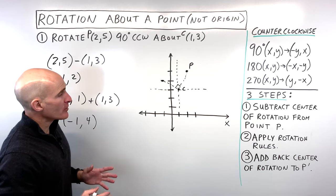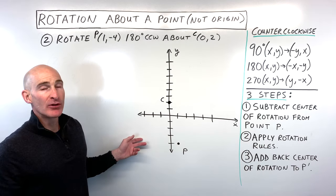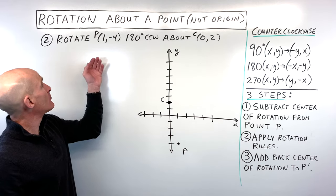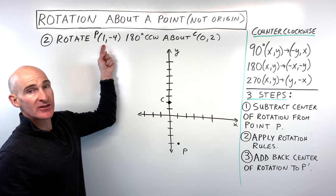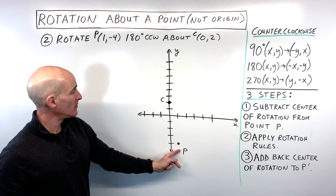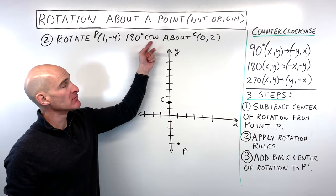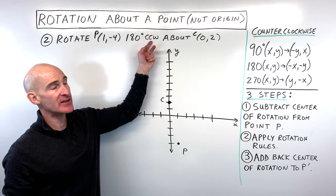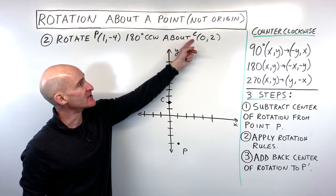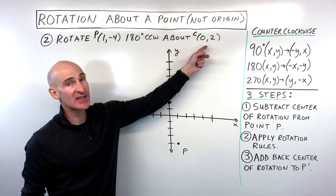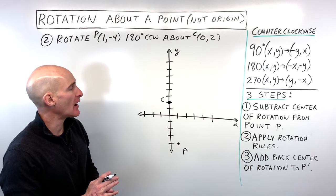So those are the three easy steps. Let's try example number two — see if you can pause the video and try this one on your own. We're rotating point (1, -4) 180 degrees counterclockwise, or clockwise — it doesn't matter because 180 is a half turn. The new center of rotation is at (0, 2).